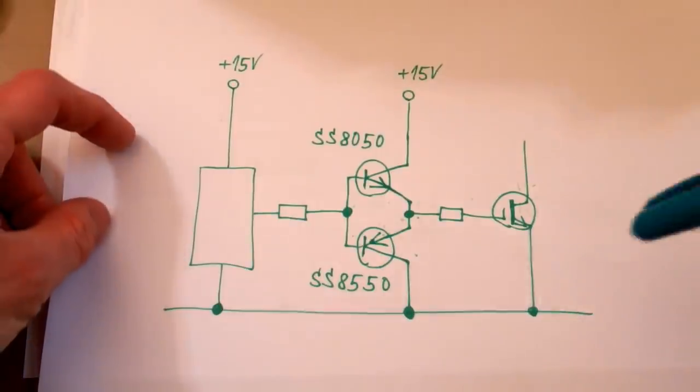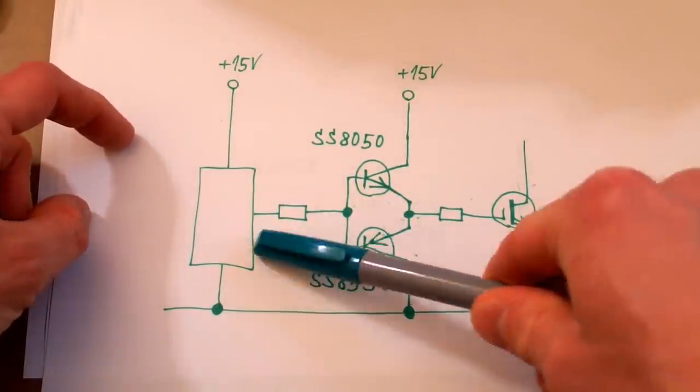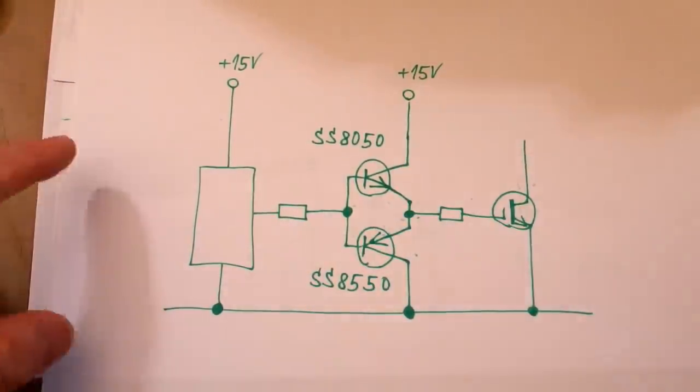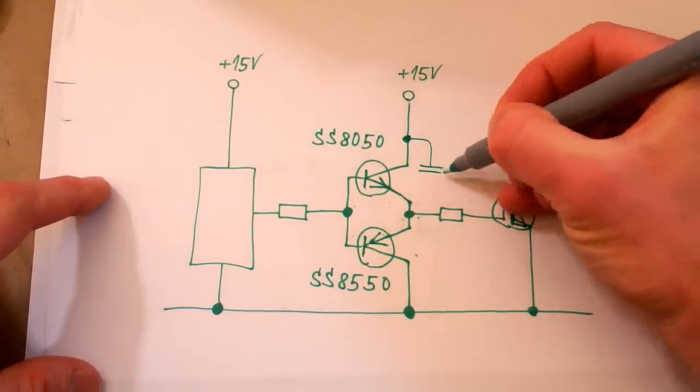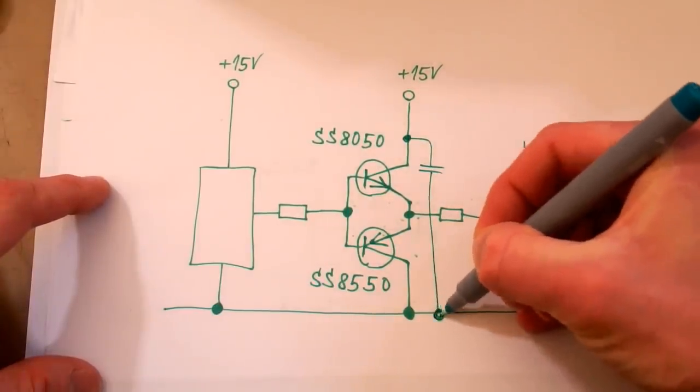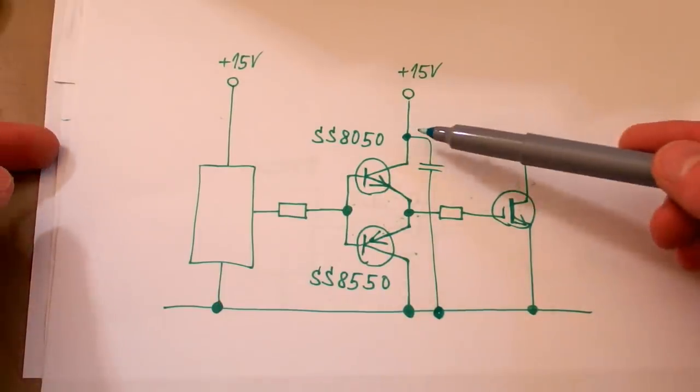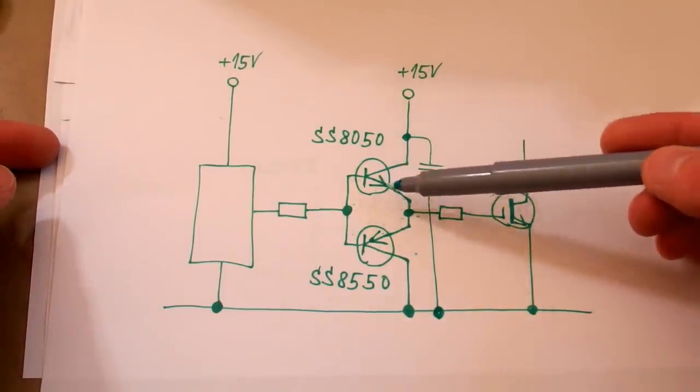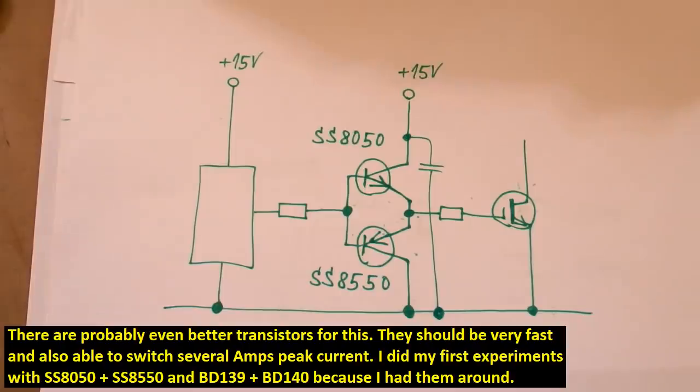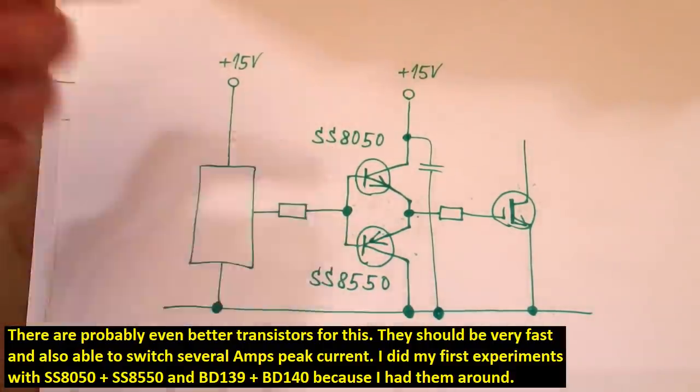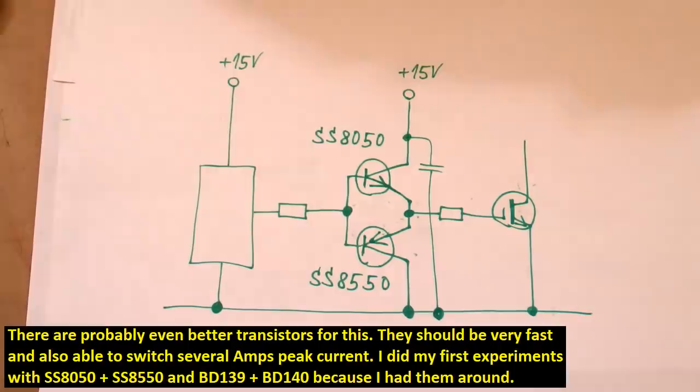It's possible to add this current amplifier to amplify the current. And of course it's better to add a capacitor in parallel like this, very close to the transistors, so they can supply a high peak current. And of course the transistors should be fast, but they also should be able to switch enough current.